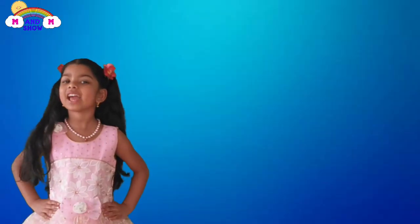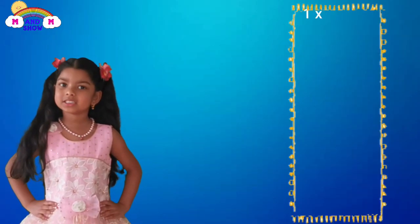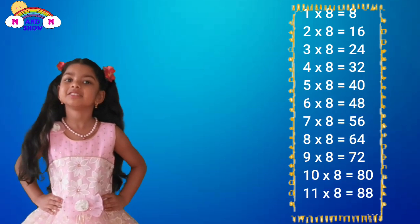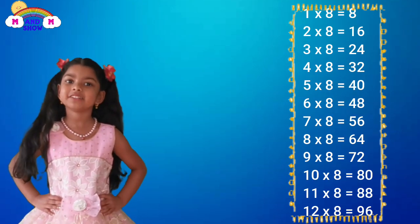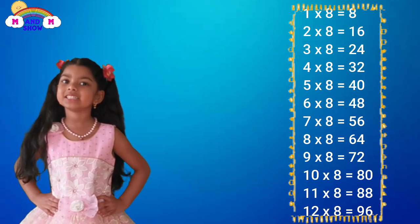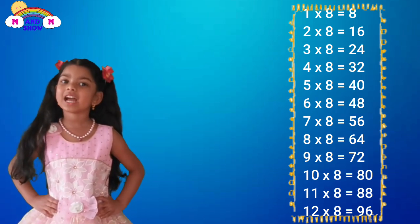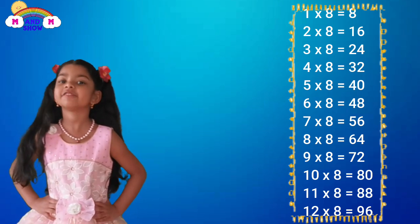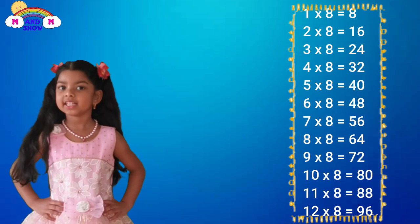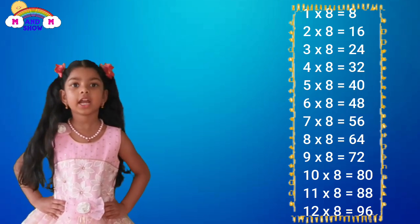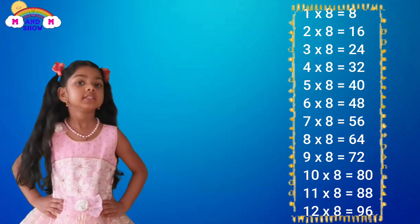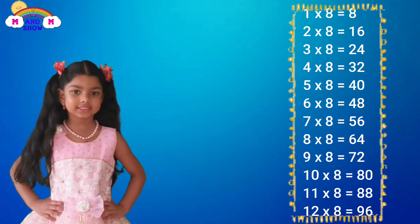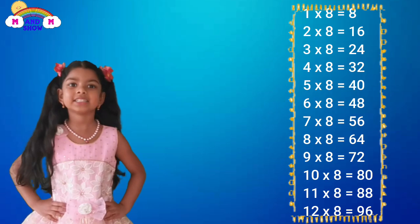And now it's time for the 8 timetables. 1 x 8 is 8, 2 x 8 is 60, 8 x 8 is 24, 4 x 8 is 32, 5 x 8 is 46, 6 x 8 is 48, 10 x 8 is 58, 10 x 8 is 57, 8 x 8 is 64, 9 x 8 is 72, 10 x 8 is 80, 11 x 8 is 88, 12 x 8 is 98.